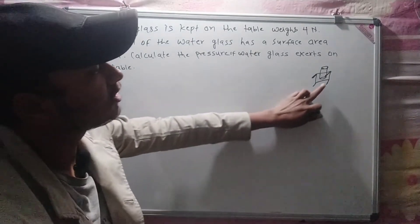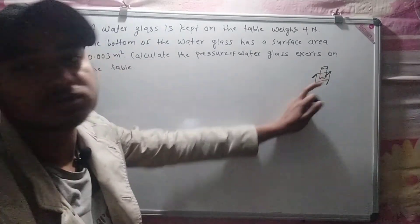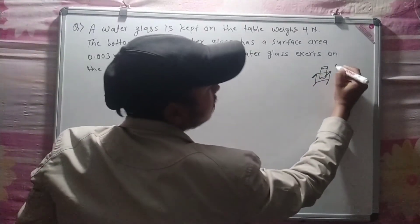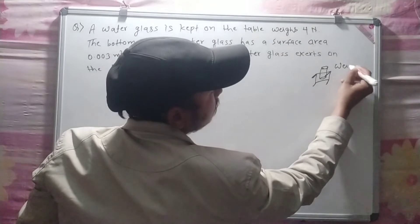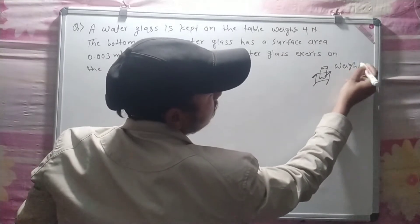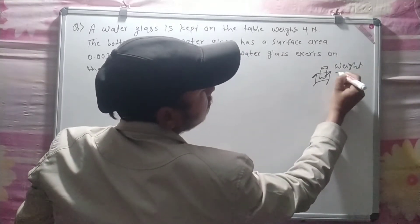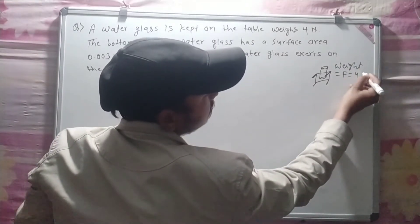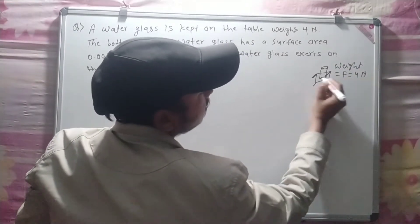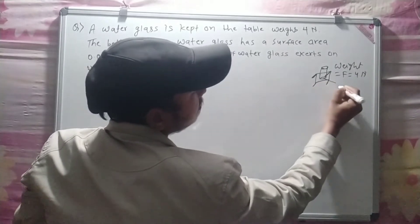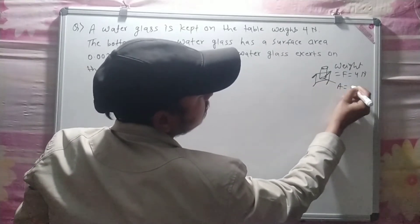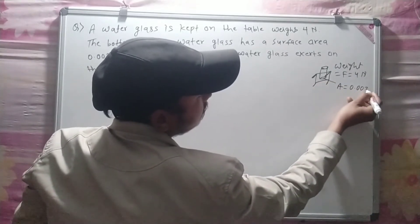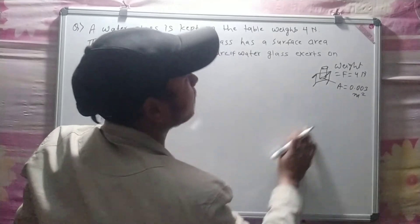Given: the weight of the glass on the table is 4 N, and the surface area is 0.003 meter square.